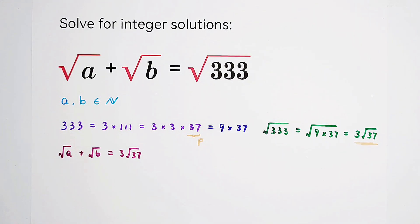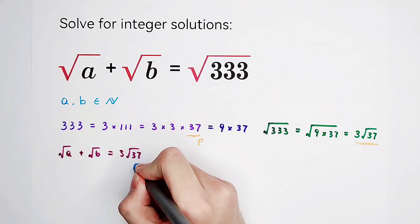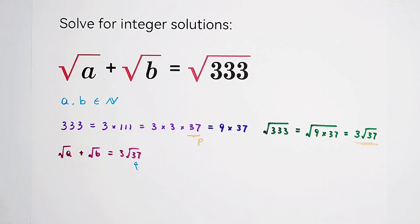Now we know that 37 is prime. If this 37 is prime, reflect carefully. The left-hand side is a sum of 2 square roots, and the right-hand side is just 1 square root.